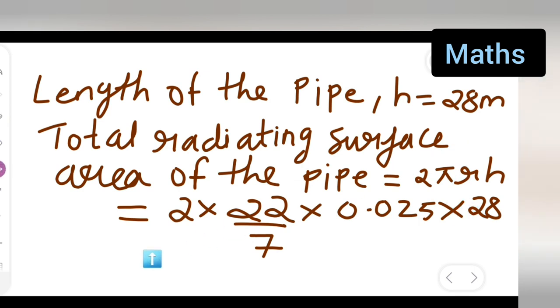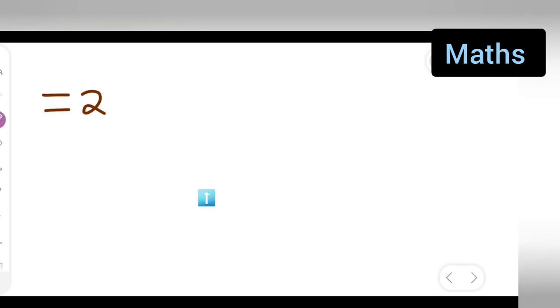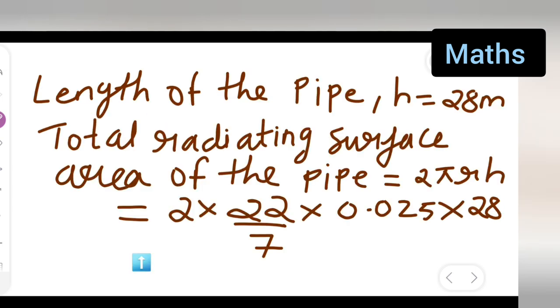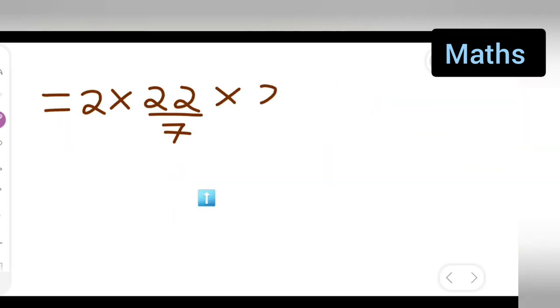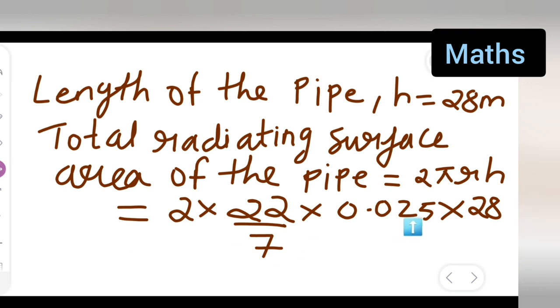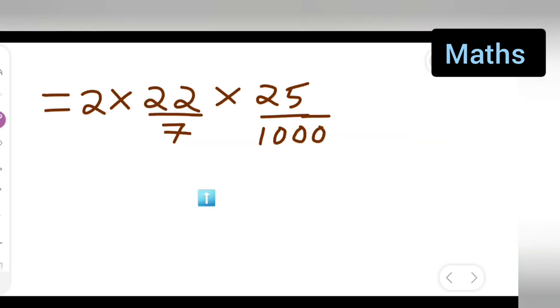Let me do it on the next page. 2 × 22/7 × 0.025 × 28. If you want to remove the decimal point it will be 25/1000, because it is in the place of three digits. 25/1000 × 28.